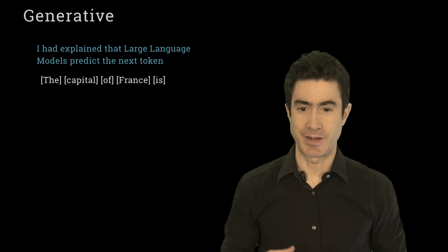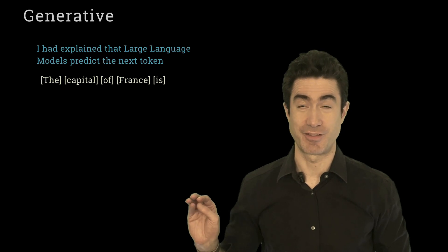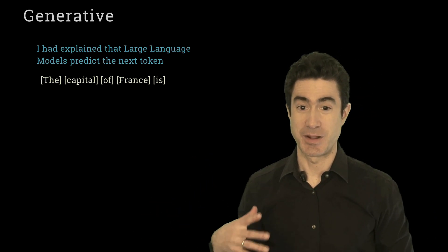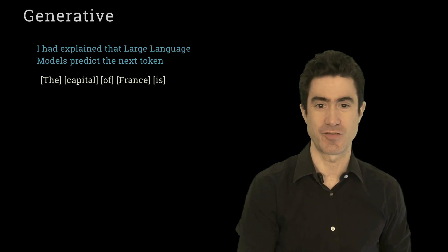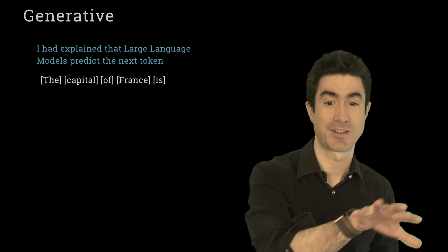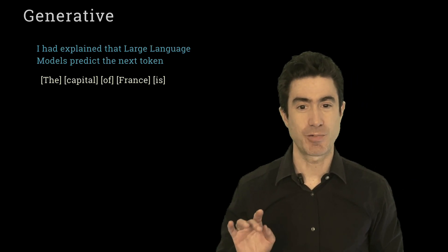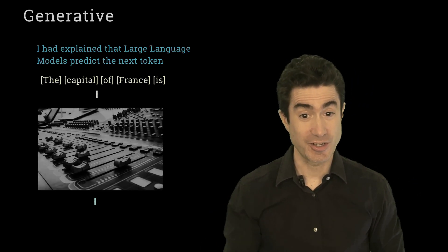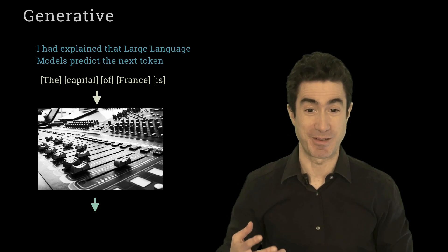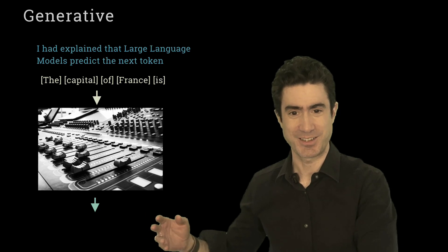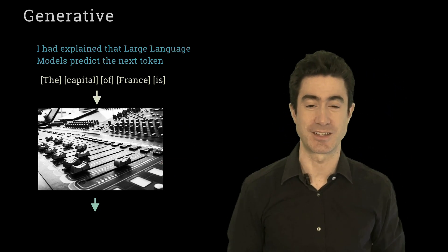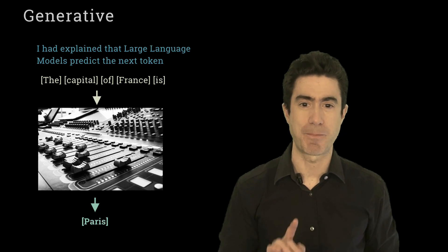And so we can explain the example I gave. Imagine the sentence, the capital of France is, or the fragment, and imagine that each of those words are a token, which is often the case. So those are the five tokens we've got: the capital of France is. And now that is put into a large language model, which I'm showing here in the form of a mixing board. We talked about it being very similar to thinking about mixers that are connected to mixers that are connected to mixers with trillions of parameters. And what comes out at the end of all that is the word Paris.